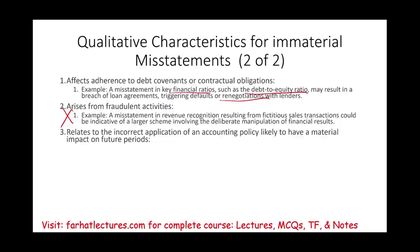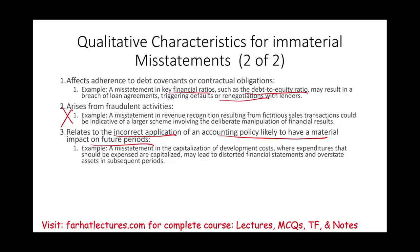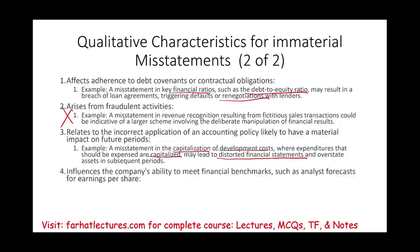If it relates to incorrect application of an accounting policy that has an impact on future periods, you also have to take that into account. Right now it's not an important issue — it's immaterial — but this misstatement might affect future periods. An example would be a misstatement in the capitalization of development costs, where expenditures that should be expensed are capitalized. The amount is small, but it might lead to distorted financial statements and overstated assets in subsequent periods, so it becomes material.